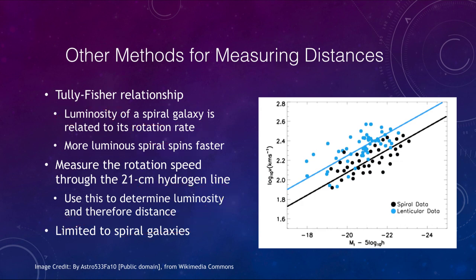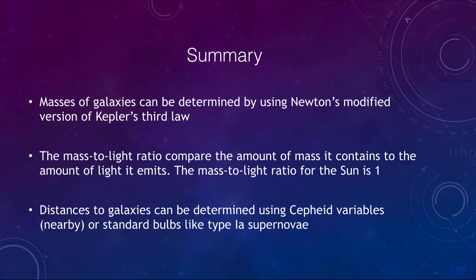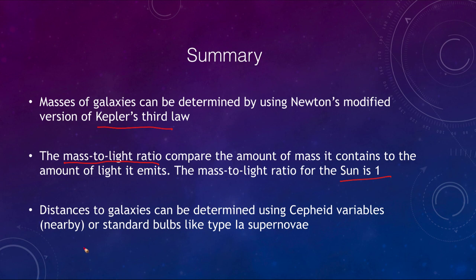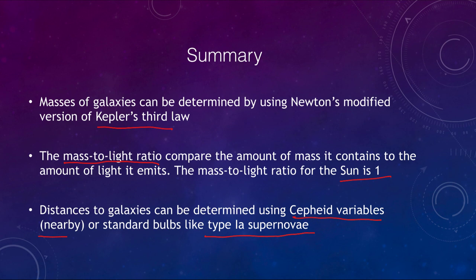To summarize: the masses of galaxies can be determined in several ways, including Newton's form of Kepler's third law. The mass-to-light ratio compares the amount of mass a galaxy contains to the amount of light it emits, with the sun as the reference at a ratio of one. Distances to galaxies can be found using Cepheid variables for nearby galaxies, or standard candles like Type Ia supernovae reaching toward the edge of the universe. That concludes this lecture on galaxy properties and distances — see you next time.